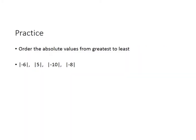Let's order these absolute values from greatest to least. What I would suggest doing first is just writing the absolute values down as regular numbers. For example, the absolute value of −6 is 6, the absolute value of 5 is 5, the absolute value of −10 is 10, and the absolute value of −8 is 8.